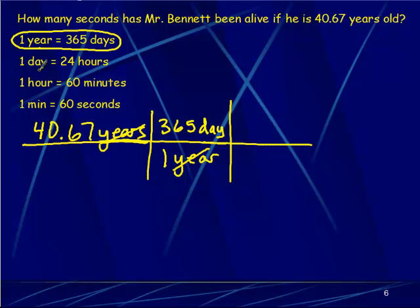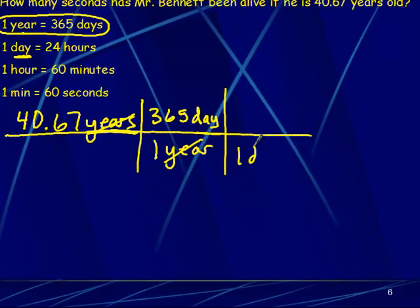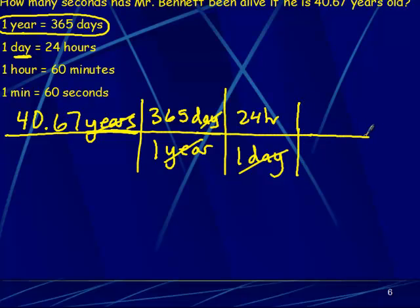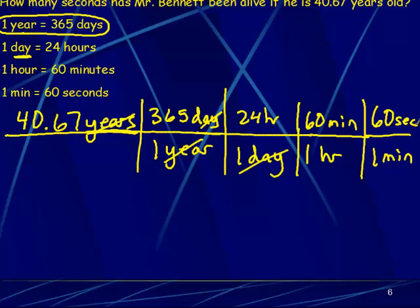Now I have days, so I look at my conversion factor and find the one that has days in it. It's one day, so I put the day on the bottom so it will cancel, and I put 24 hours above it — always put what it's equal to above it. Days on top, days on bottom, they cancel, leaving hours. One hour is 60 minutes, and one minute is 60 seconds. Hours cancel, minutes cancel, and I'm left with the unit of seconds. I've now converted from years all the way to seconds using four conversion factors.